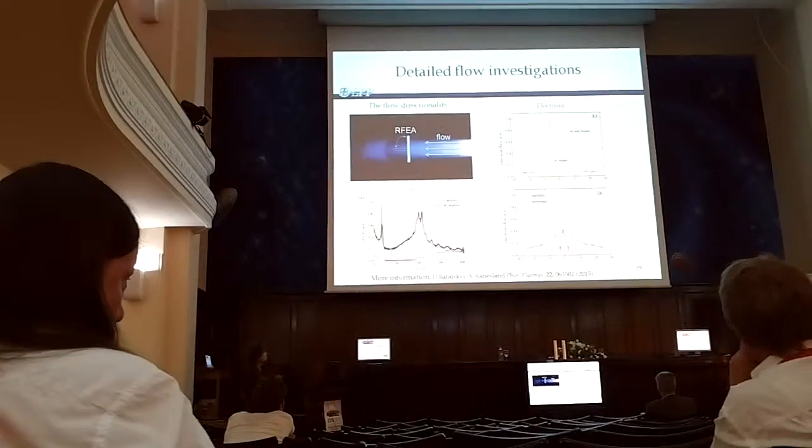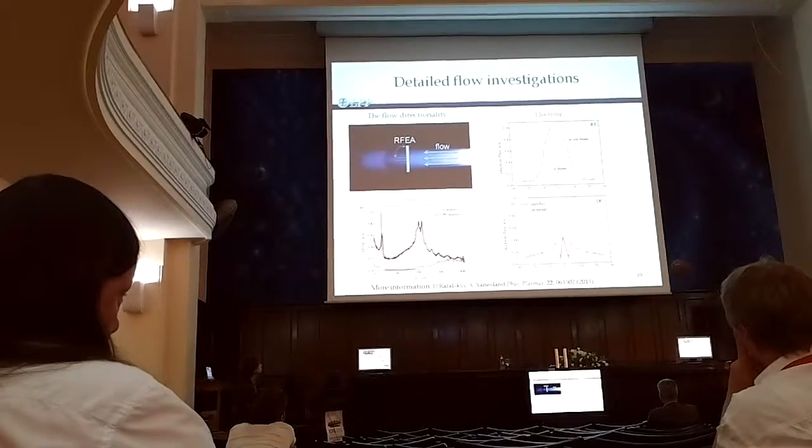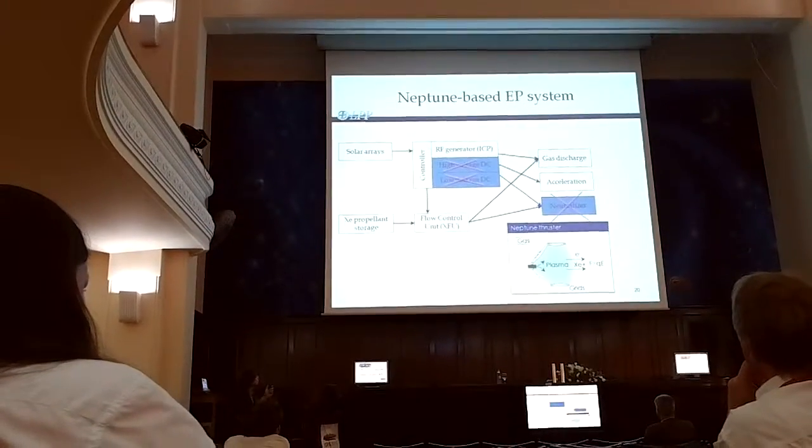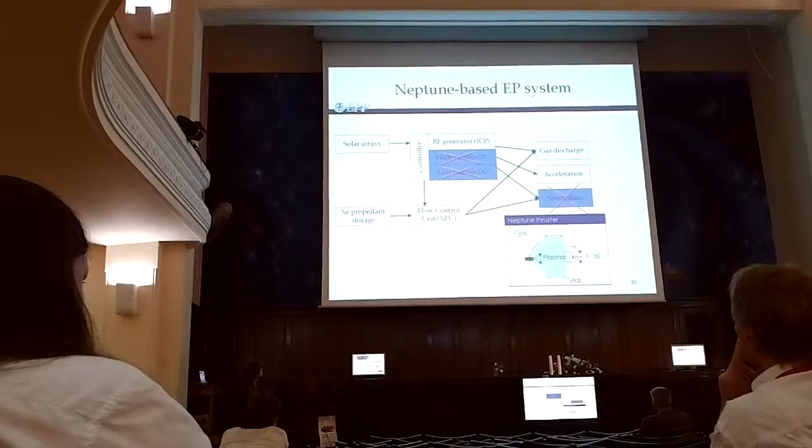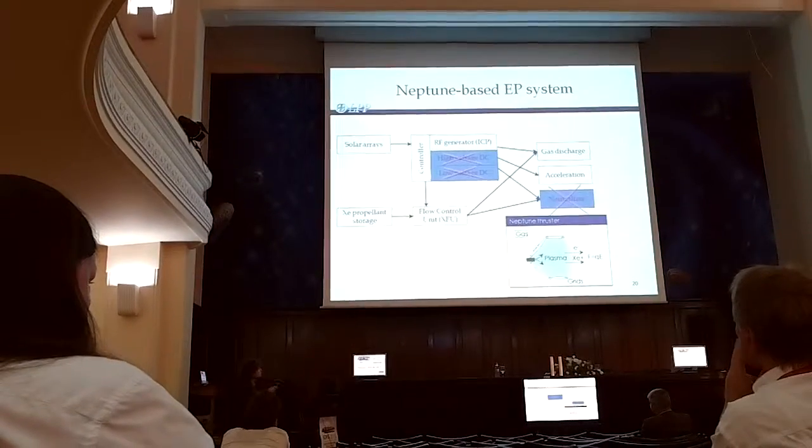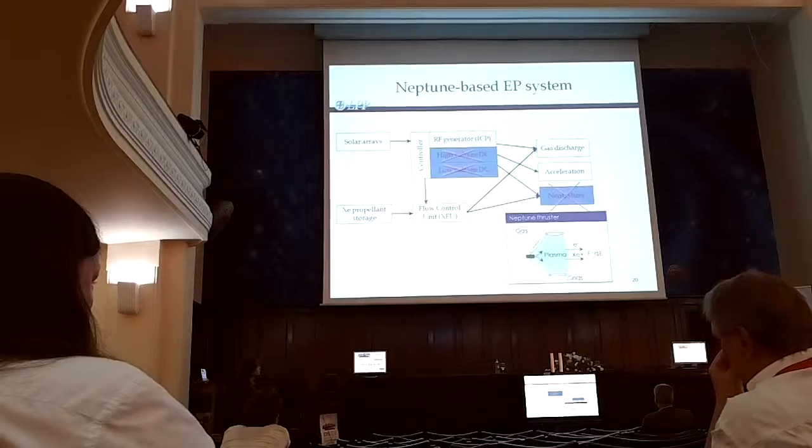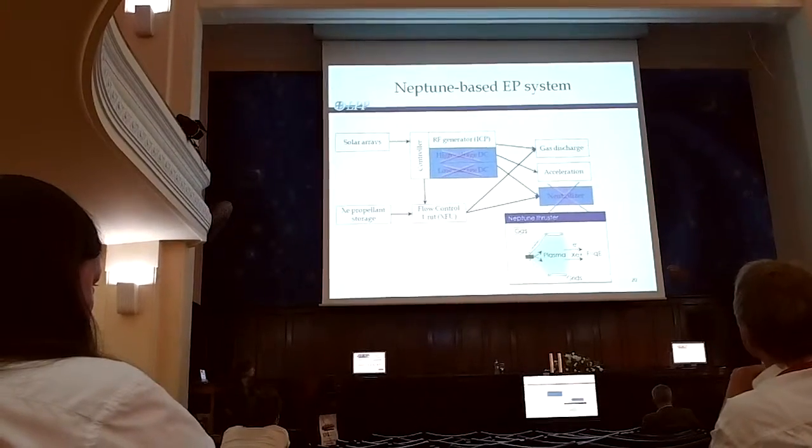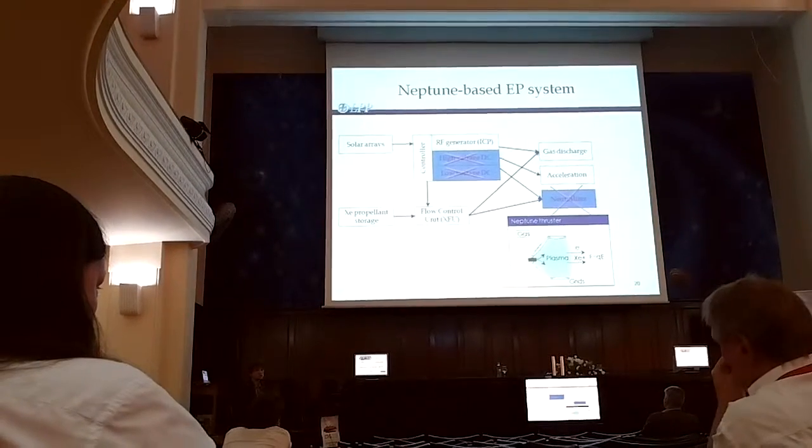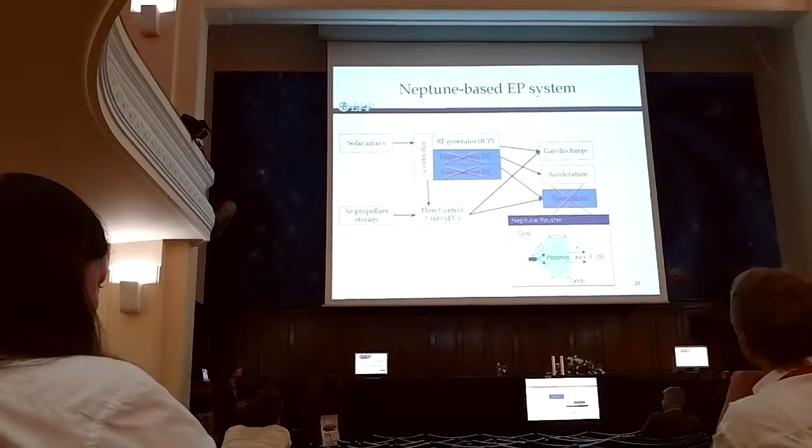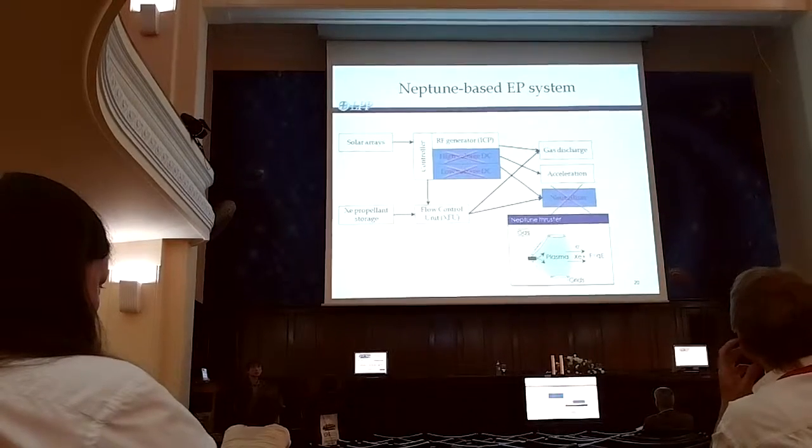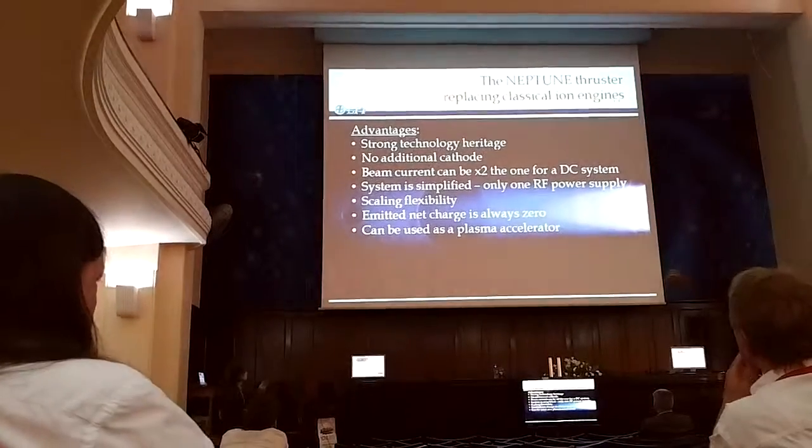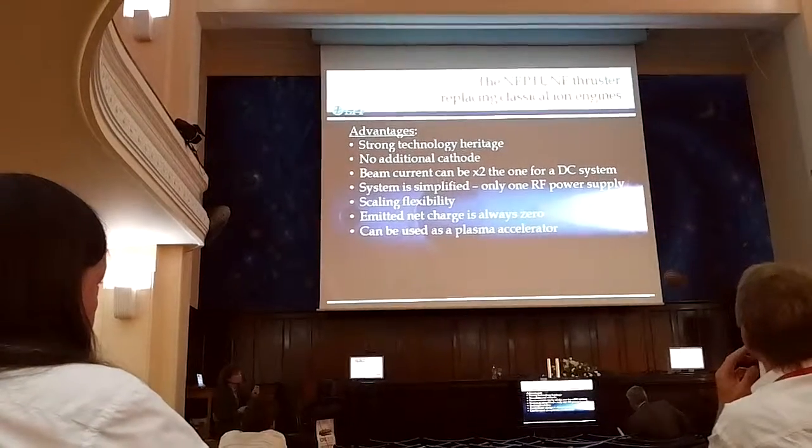So, as a result, in this system, as you can see, you can use only one RF generator. You have gas discharge sustaining, you have acceleration, and you have actually neutralization. You don't need to use many, many subsystems. That's why I believe, quite soon, this concept will be actually flying. And one of the advantages is a strong technology heritage with existing ion thrusters. That's why it's possible. That's a conclusion for this concept.